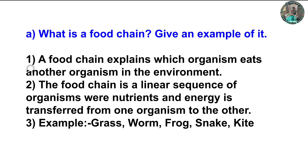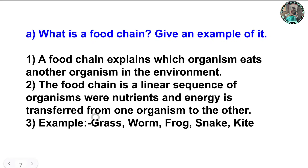Answer the following questions. What is a food chain? Give an example. The answer is: a food chain explains which organism eats another organism in the environment. It is a linear sequence of organisms where nutrients and energy are transferred from one organism to another. Example: grass → worm → frog → snake → kite.